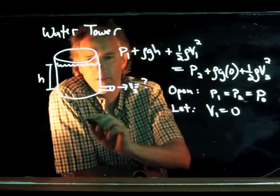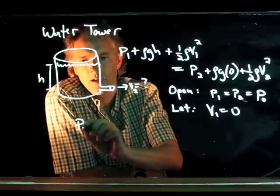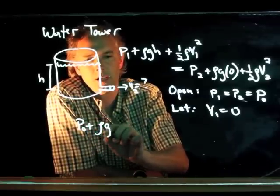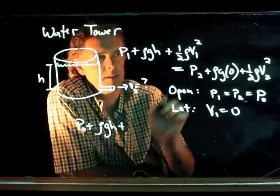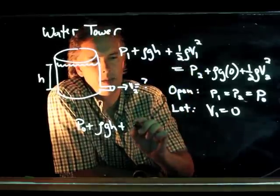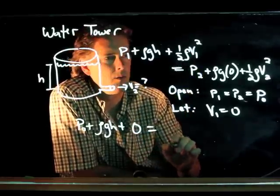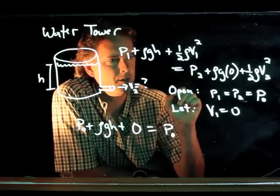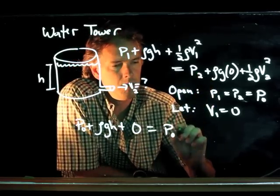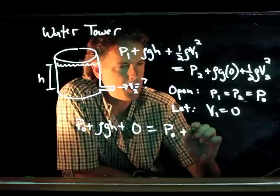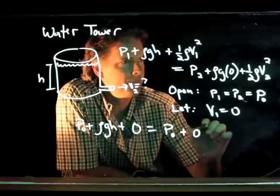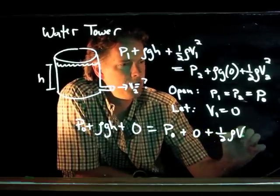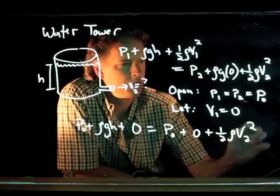We already said the height at the bottom is zero. So let's rewrite our equation: P0 plus rho gh plus zero equals P0 plus rho g times zero plus one-half rho V2 squared.